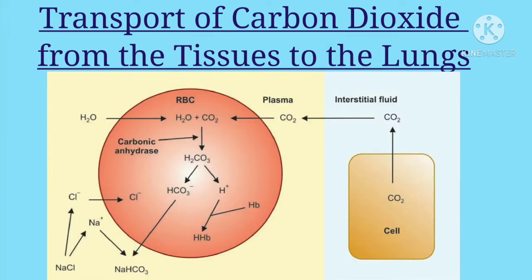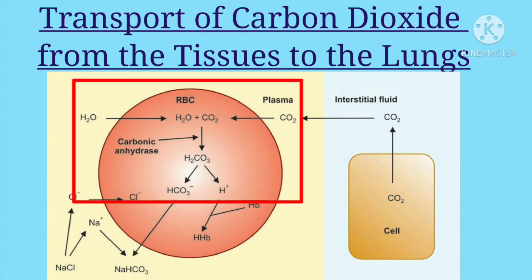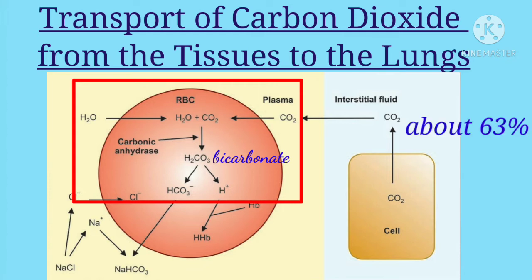About 30% of carbon dioxide is transported in this form. Another procedure by which carbon dioxide is transported through RBC is, as RBC contains large amount of carbonic anhydrase. This enzyme is necessary for the formation of bicarbonate from water and carbon dioxide. Thus, it helps to transport carbon dioxide in the form of bicarbonate from tissue to the lungs. About 63% of carbon dioxide is transported in this form.